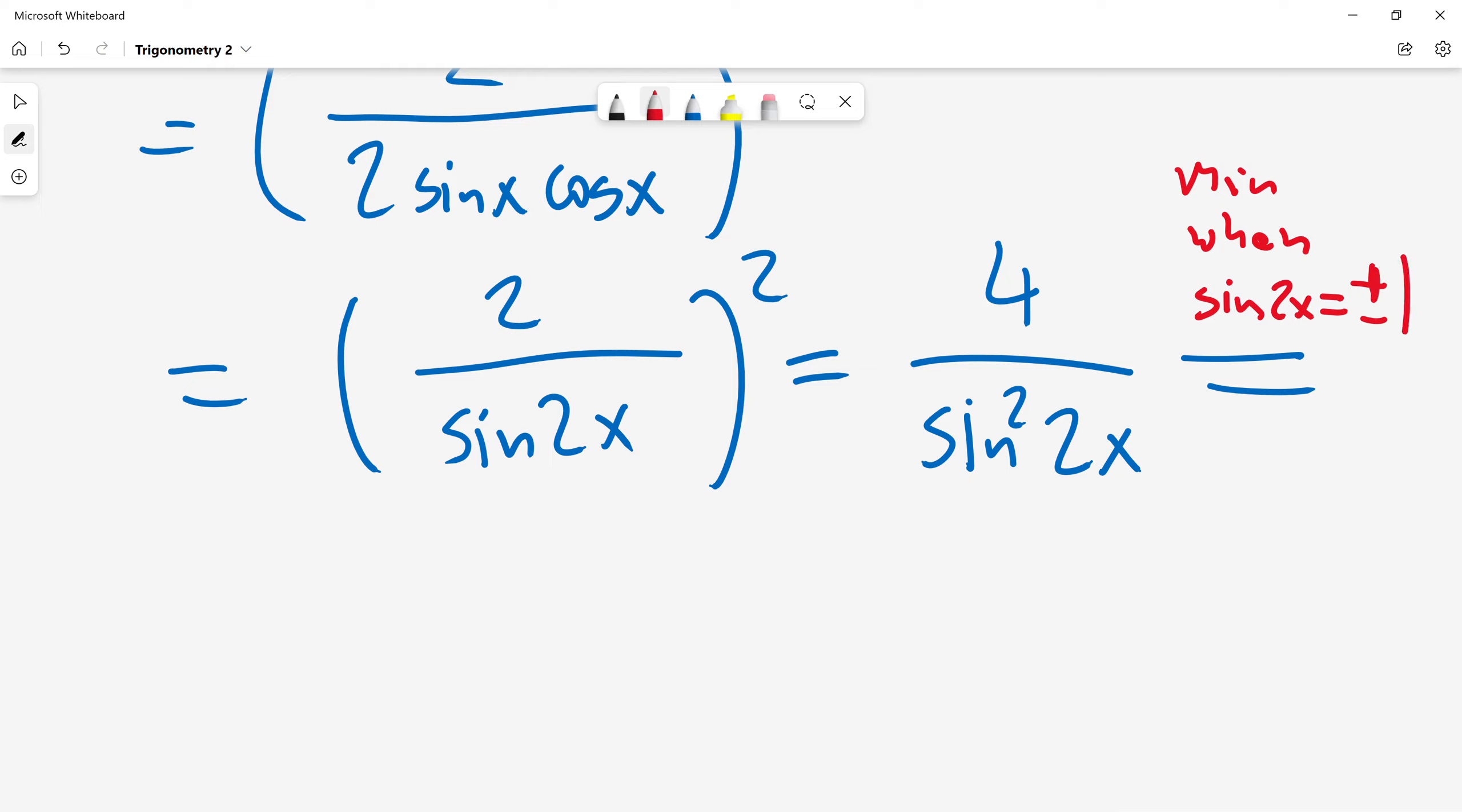Because square of plus or minus one will be just positive one. And then minimum value of this trigonometric expression will be just four divided by one, which is four. So that's my answer.